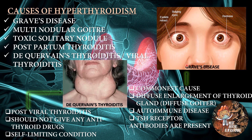In this picture you can see a patient with Graves' disease and some clinical features like bulging eyes, eyelid retraction, and redness of the eye. Graves' disease is the commonest cause of hyperthyroidism. It is a diffuse enlargement of the thyroid gland, or diffuse goiter. It is also an autoimmune disease, and because of that, TSH receptor antibodies are present. In this picture you can see a patient with de Quervain's thyroiditis, which is a post-viral thyroiditis. We should not give any antithyroid drugs because it is a self-limiting condition.